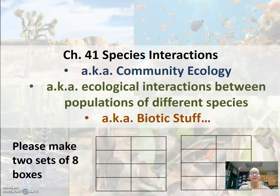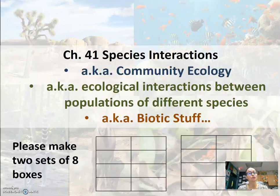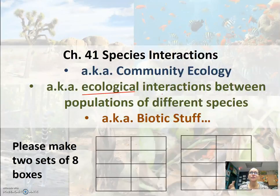In chapter 41, the book titles it Species Interactions. I like to refer to it as community ecology. In chapter 40, it was about populations, and now we're moving up to communities. Really what we're looking at are ecological interactions between the populations of different species — how different populations live together and how they interact.